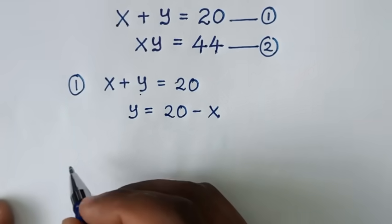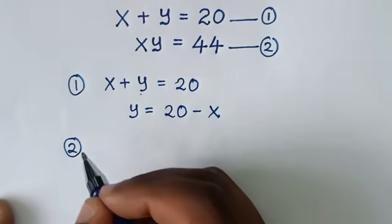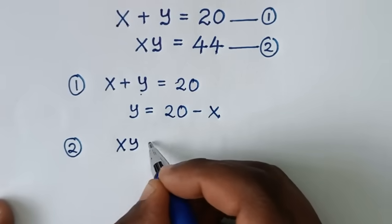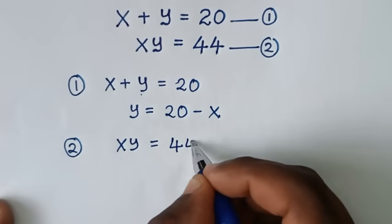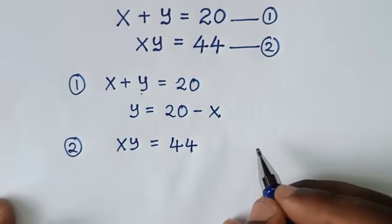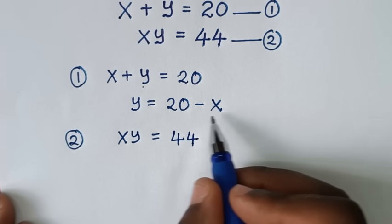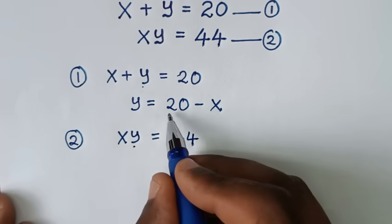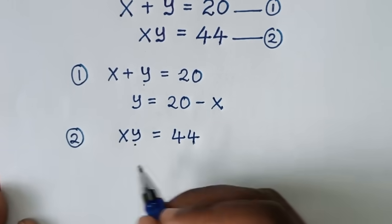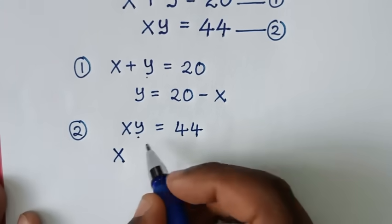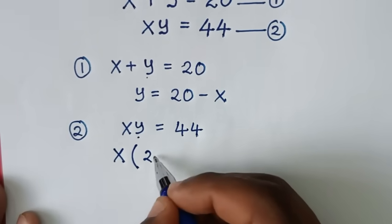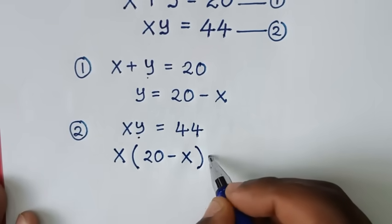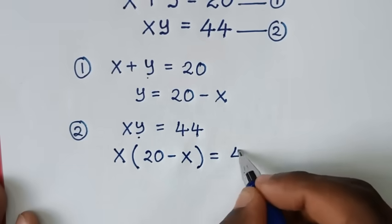In the next step, from equation 2, which is xy equals 44, we substitute y with the expression from equation 1, which is 20 minus x. So it becomes x times (20 minus x) is equal to 44.